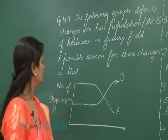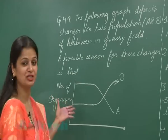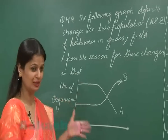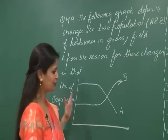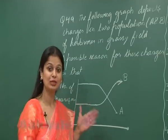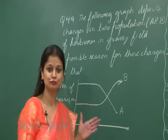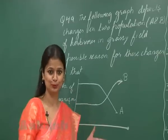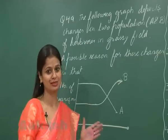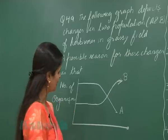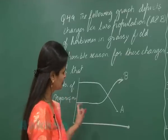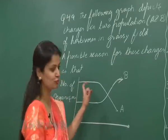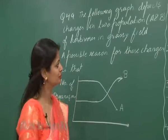Coming to question number 49: the following graph represents the population of two herbivores in a grassy field. We have to identify the correct option for these two populations.